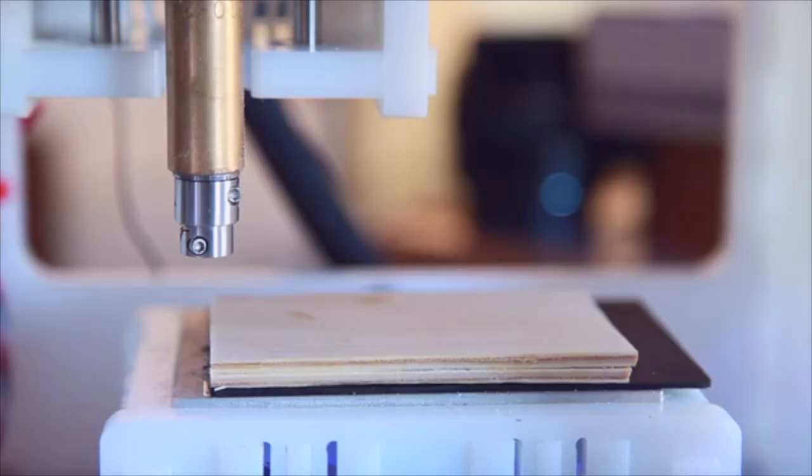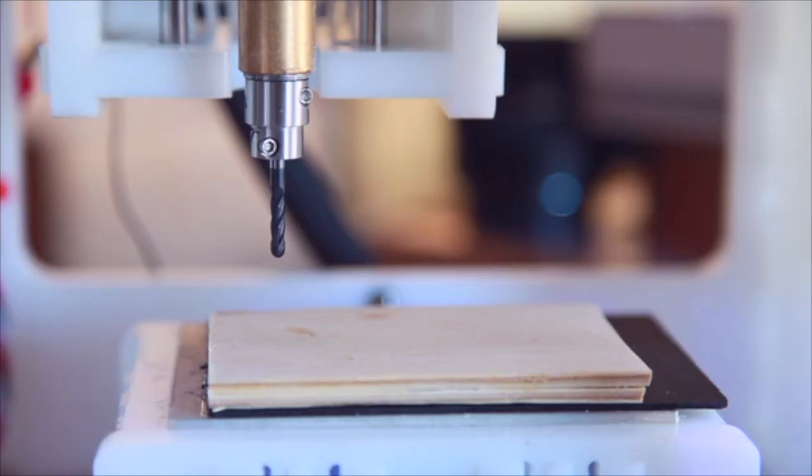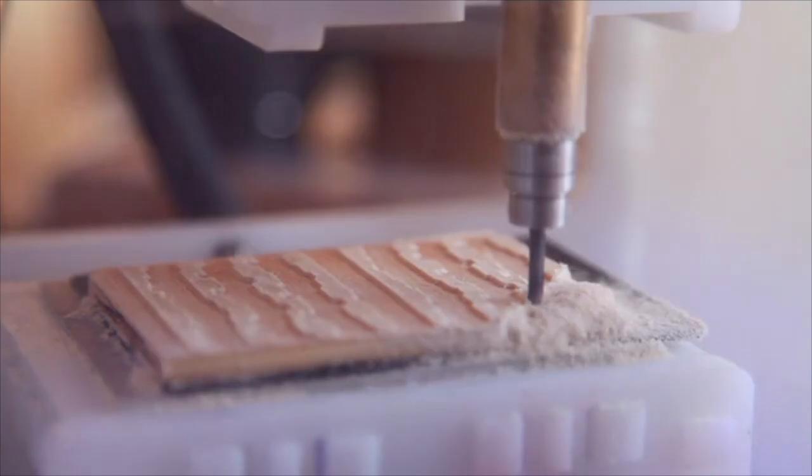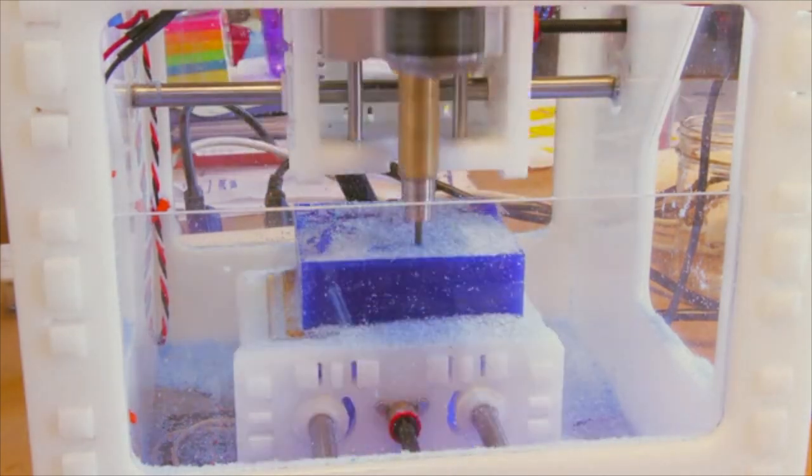3D printing is an additive manufacturing process where you stack up layers of material to get a particular shape. And it's a very limited number of materials that you can use. A mill is a subtractive process. You cut away the material.